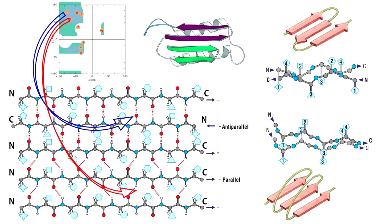Let us discuss beta-pleated sheets. Alpha helices involve intra-element main chain hydrogen bonding. In contrast, the beta-pleated sheet involves inter-element hydrogen bonds between residues distant in the linear sequence. In beta sheets, two or more strands that may be widely separated in the primary sequence are arranged side by side with hydrogen bonds between the strands.